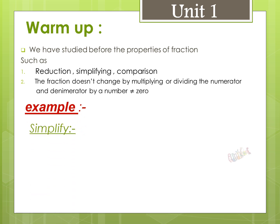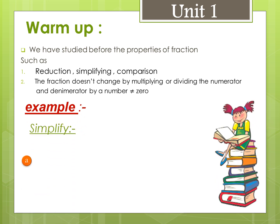Simplifying — little a: 3 over 6. Since 3 and 6 are both divisible by 3, we divide: 3 divided by 3 equals 1, and 6 divided by 3 equals 2. So 3 over 6 equals one half.